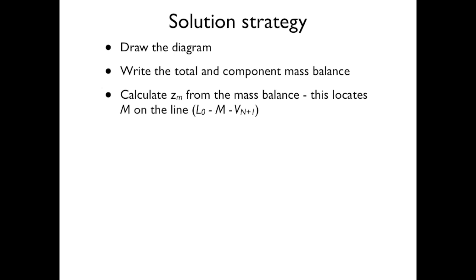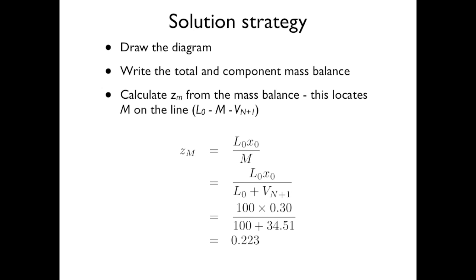We can calculate Z_M, the concentration of solute in the mixed stream, from the mass balance. This is used to locate the point M on the mass balance line L₀, M, V_{N+1}. Z_M is equal to L₀ times X₀ — the flow rate of solute into the system — divided by the total mixture quantity, which is L₀ plus V_{N+1}. Substituting in the numbers gives Z_M equals 0.223.